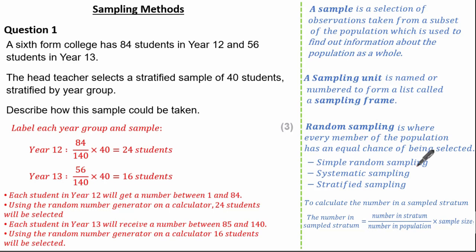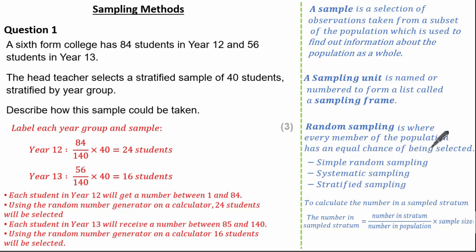In summary, we've gone through three types of random sampling methods: simple random sampling, systematic sampling, and stratified sampling. In each method, every member of the population has an equal chance of being selected and a sampling frame is needed.